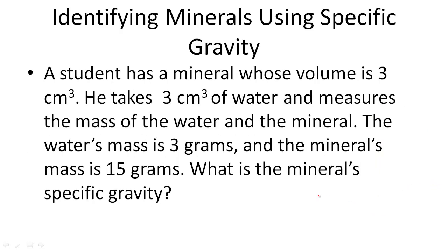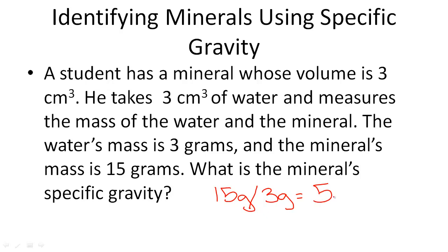So if a student has a mineral whose volume is 3 centimeters cubed, he takes 3 centimeters cubed of water and measures the mass of the water and the mass of the mineral. The water's mass is 3 grams and the mineral's mass is 15 grams. To find the mineral's specific gravity, we take the mineral's mass and divide it by the water's mass: 15 divided by 3 is 5, so the specific gravity is 5.